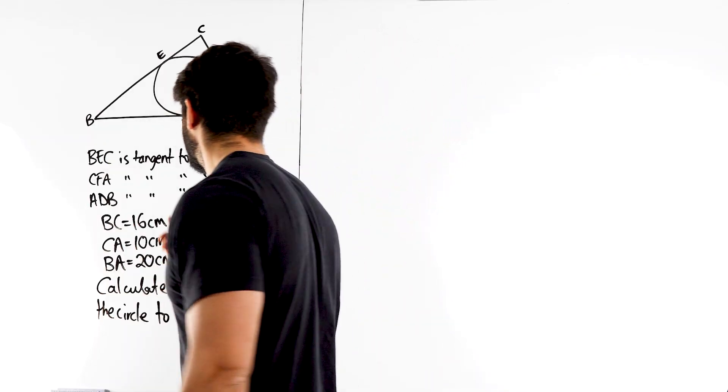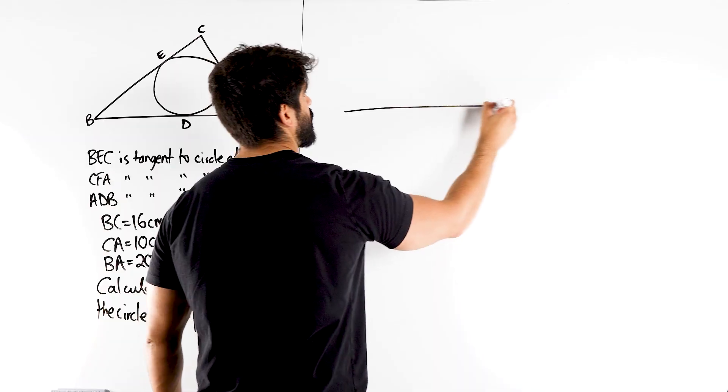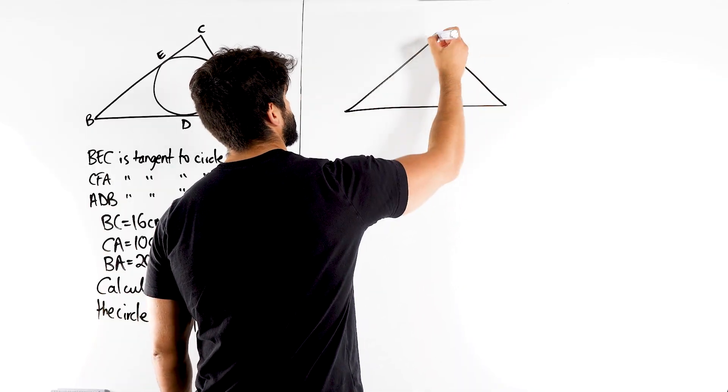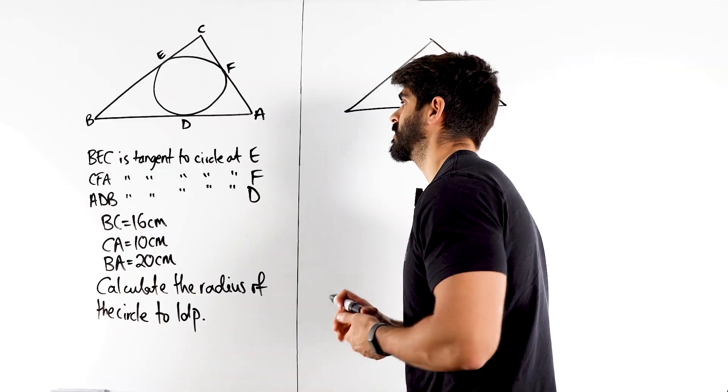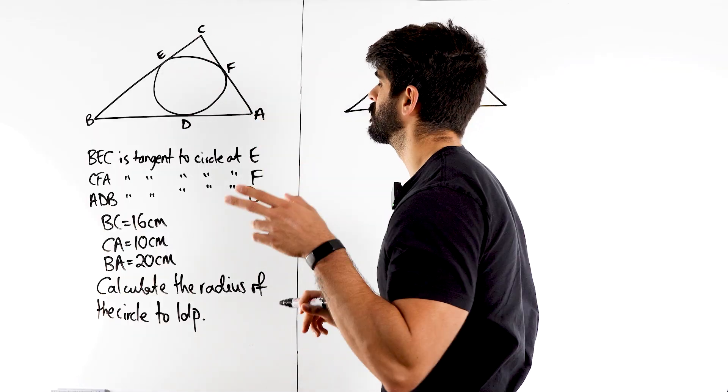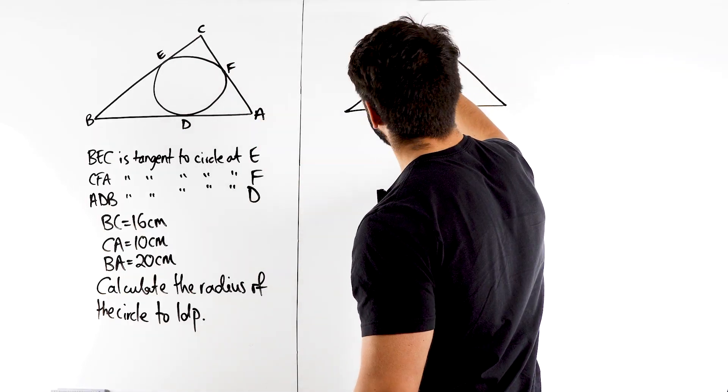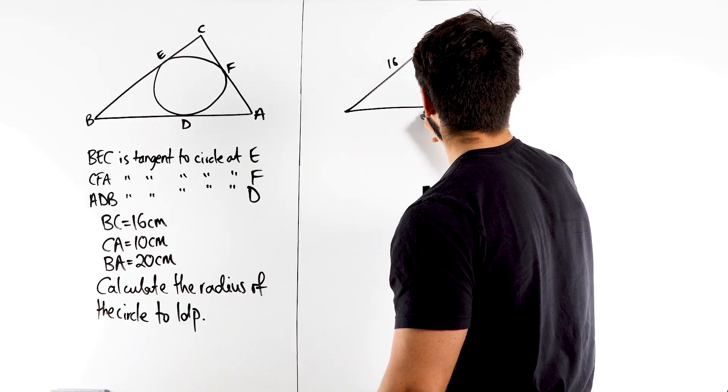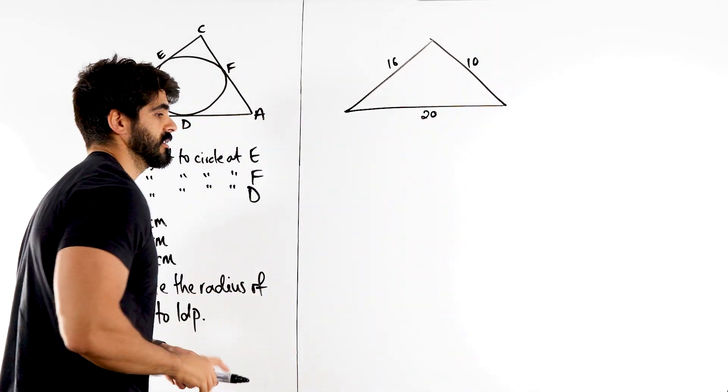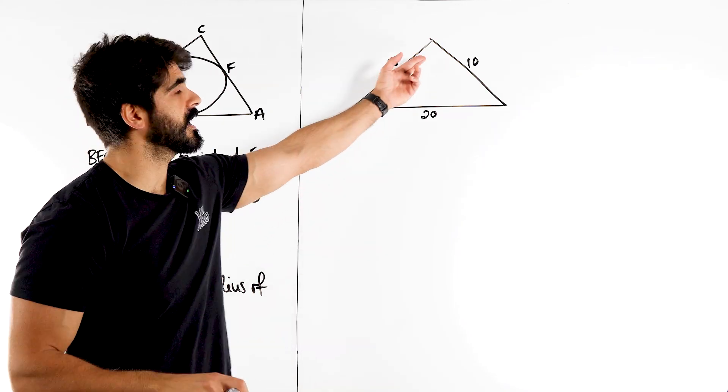Okay, so I don't want to mess up the diagram too much so I'm just going to redraw that triangle. Now it looks like a right angle triangle especially in the photo that the student sent me. That looks like a right angle but how can we verify that? So we have 16, we have 10 and 20.